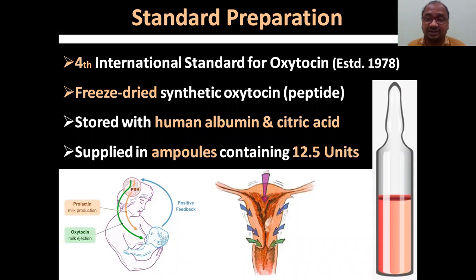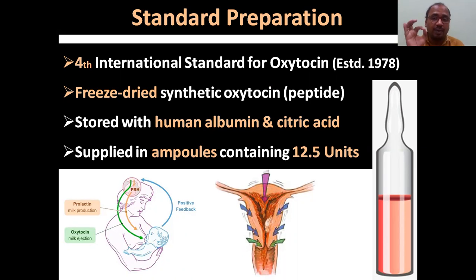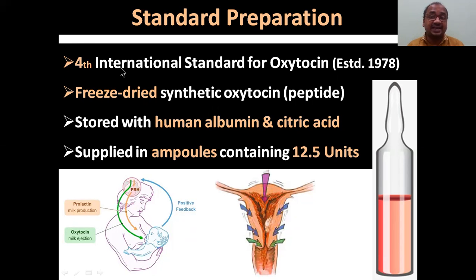Oxytocin consists of amino acids like a protein structure. It is stored with human albumin — a protein — along with citric acid, and it is supplied in ampoules containing 12.5 units. This is the Fourth International Standard preparation.